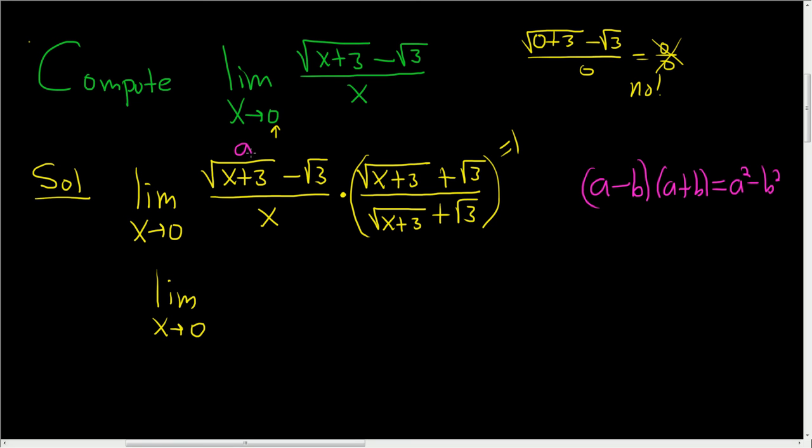So in this problem, this here is our a, and this is our b. So it's just going to be a squared, so we square this guy, so we just get x plus 3 minus, and then we square the b, so we just get 3.